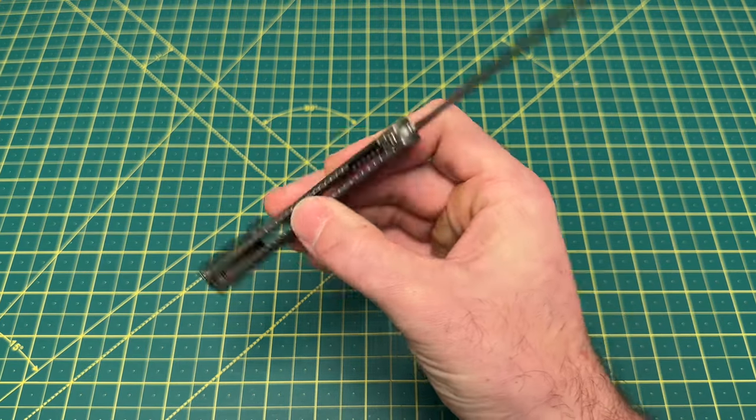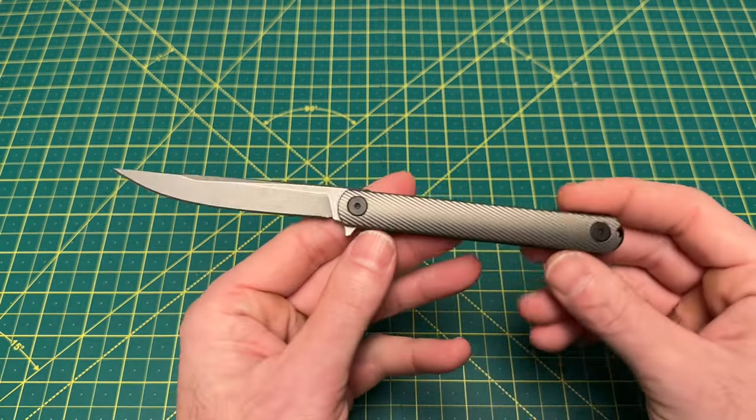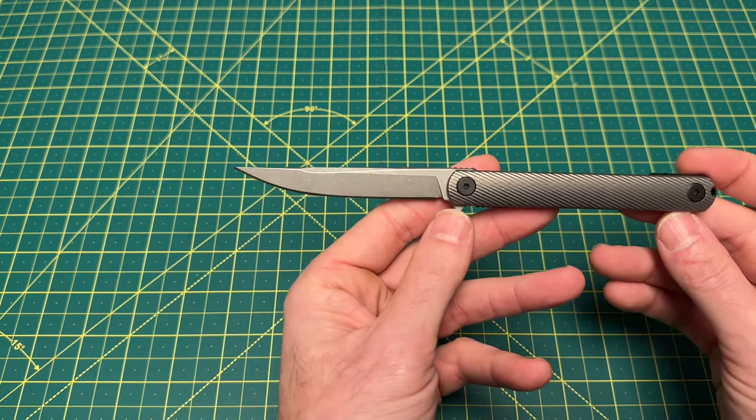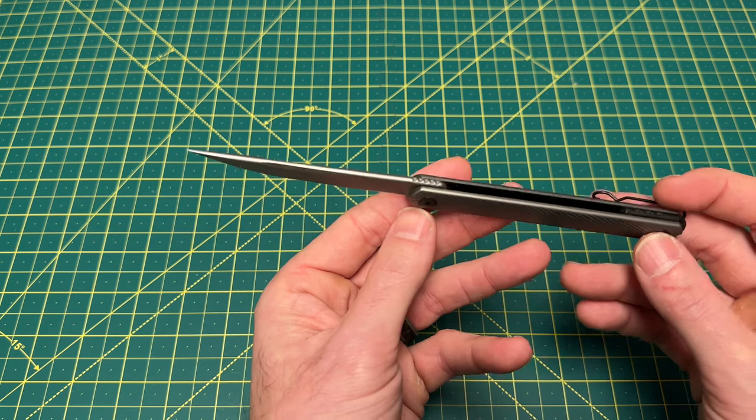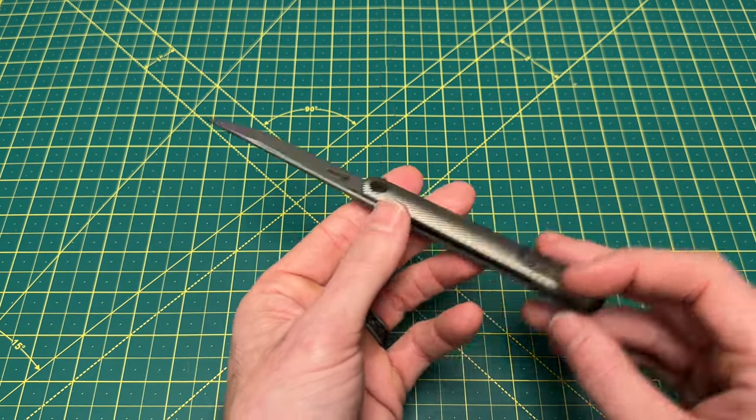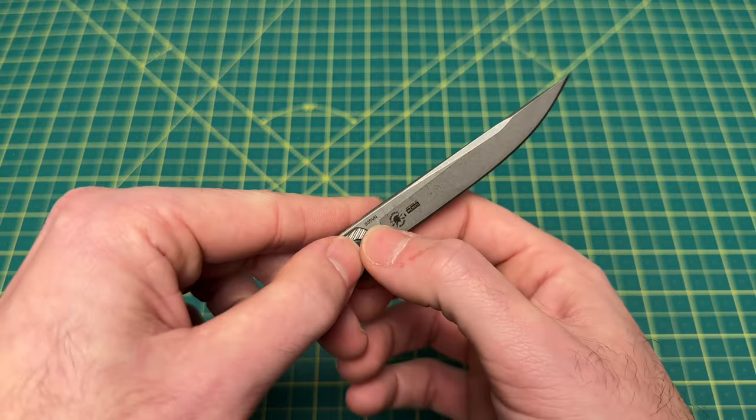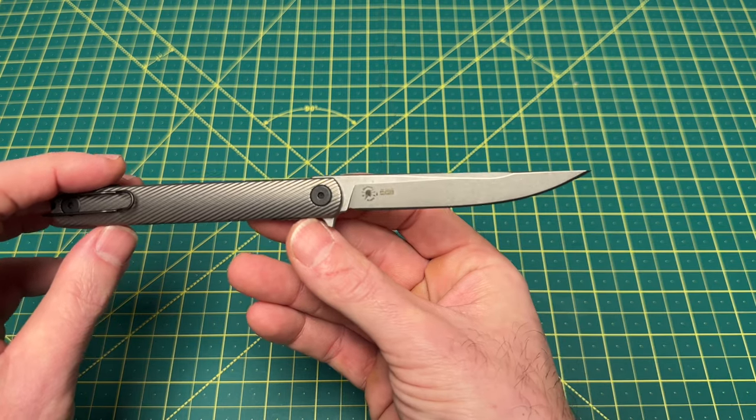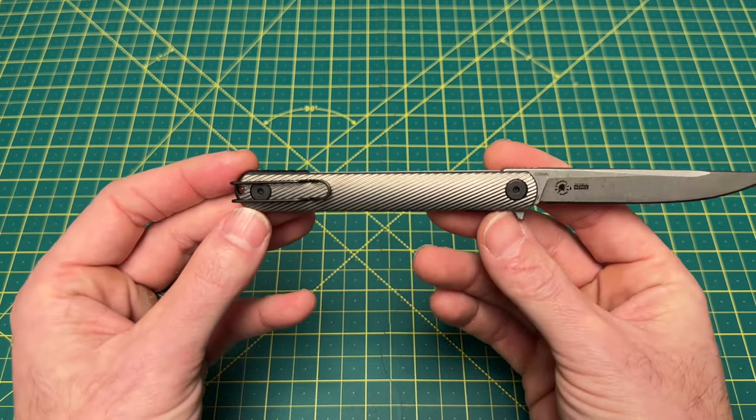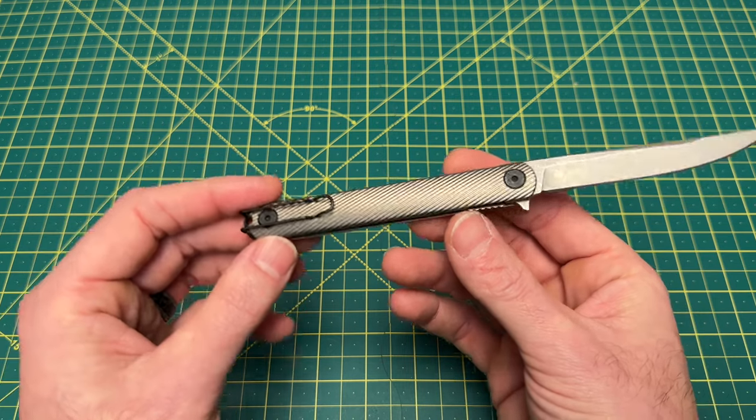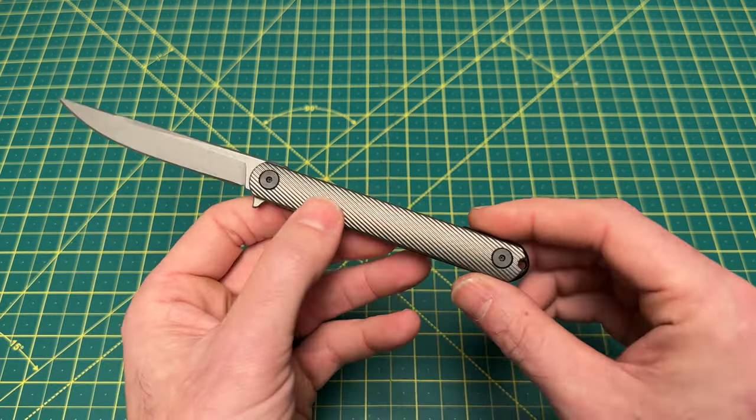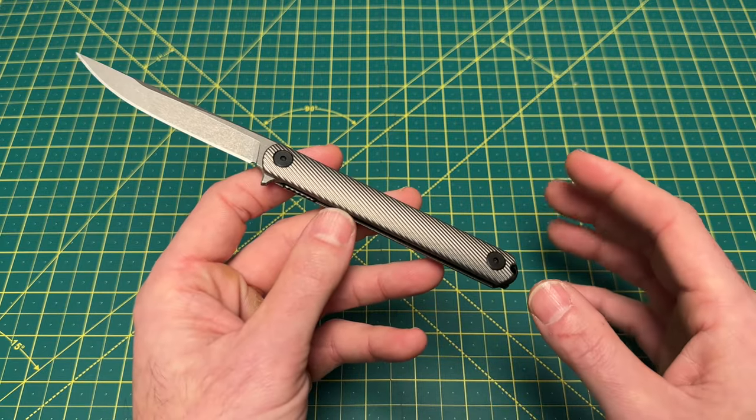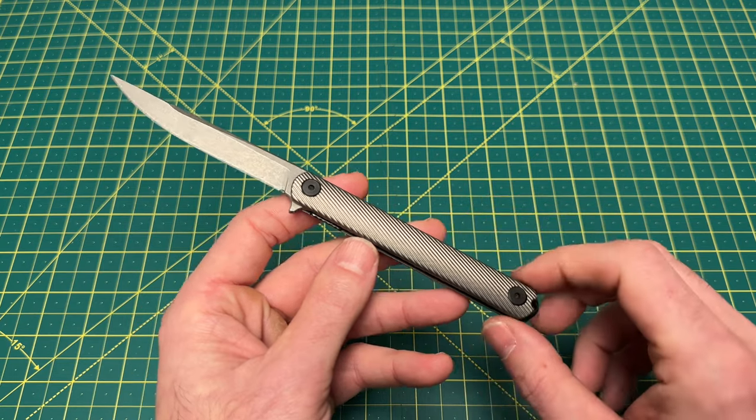Now, let's take a look at some overall specs on this knife. We have an overall length coming in at 8 inches with a blade length of 3.5 inches and a blade thickness at 125 thousandths. We have blade material of S35VN for the steel, and we have a straight back style blade with a flat grind.